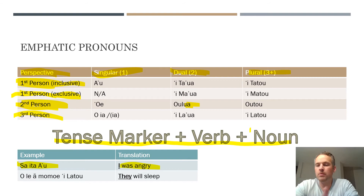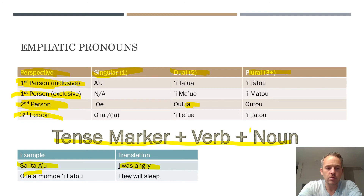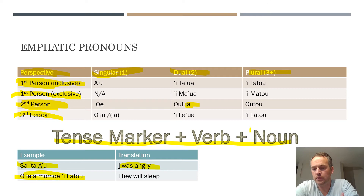I'm using emphatic pronouns first because it's easier to plug in and construct sentences with them. In reality, most of the time when using pronouns as the subject of a sentence, you'll use descriptive pronouns — but emphatic pronouns are absolutely acceptable and will get you by. The second example is ole'a moe ilātou: ole'a is the future tense marker, moe is the plural form of 'sleep,' and ilātou is the third person plural pronoun — so it means 'they will sleep,' with emphasis on 'they.'